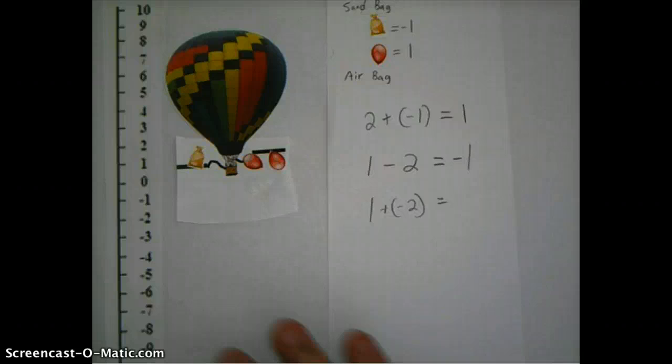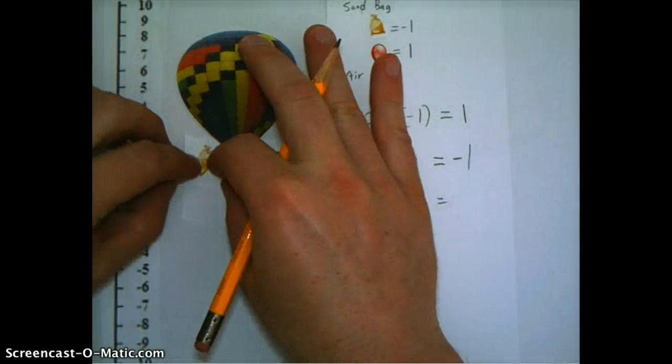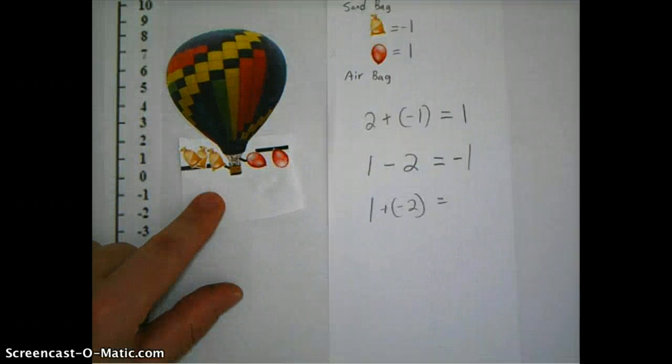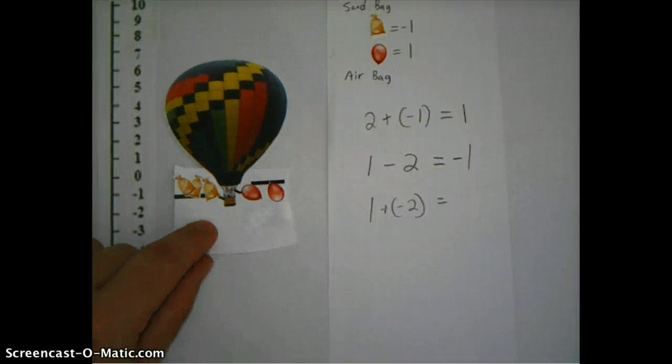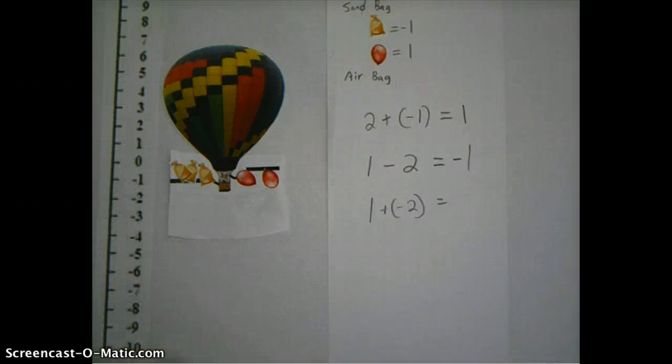So if I add on two more sandbags in here, now I've got three sandbags. That's going to make it heavier. The balloon is going to drop two until it's at minus one, which is where we were with the other problem. The altitude dropped to minus one.